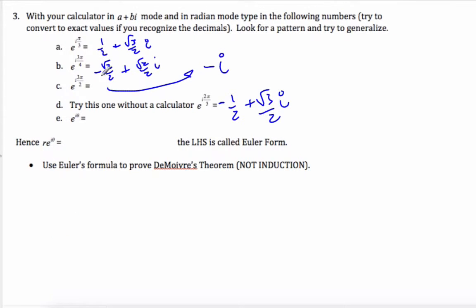So hopefully you were able to come up with these values, even this last one here where you tried on your own. Did you recognize, or are looking for a pattern? This value here is cosine of 2π by 3 plus i. This value here is sine of 2π by 3.